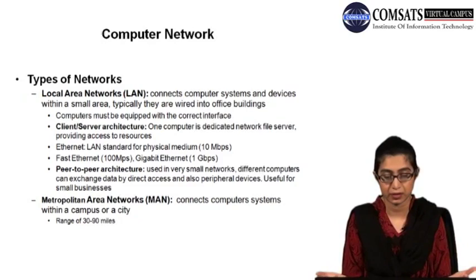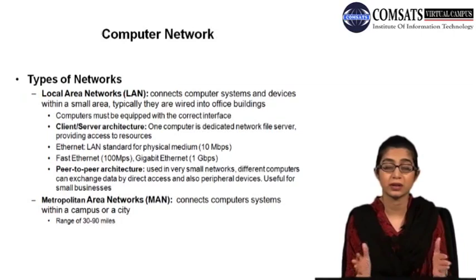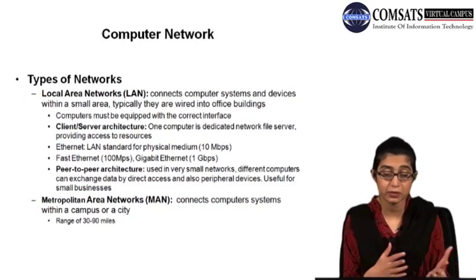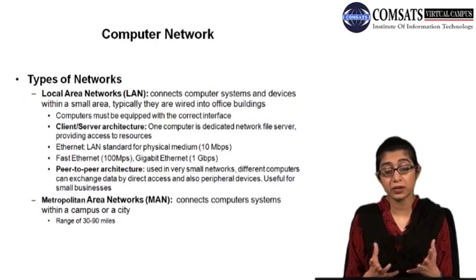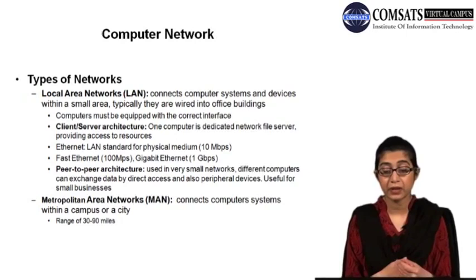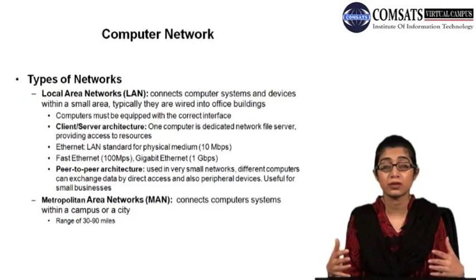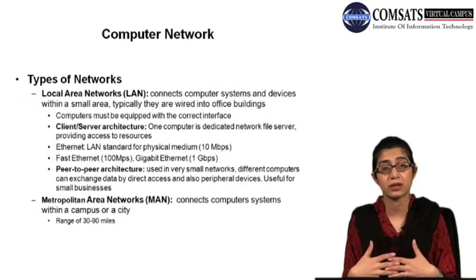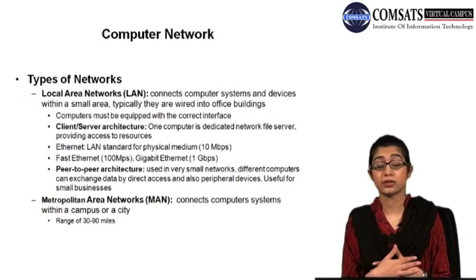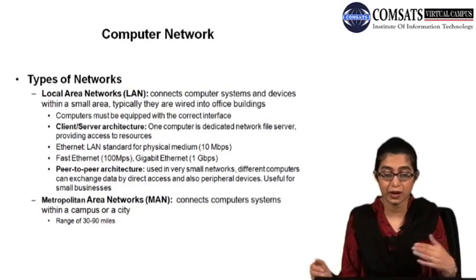The standard used with the LAN is basically Ethernet, which is a LAN standard for physical medium and works at the speed of 10 megabits per second. Fast Ethernet works at 100 megabits per second, or gigabit Ethernet works at 1 gigabit per second. Another architecture in local networks is peer-to-peer, used in very small networks where different computers are connected with one another and can exchange data by direct access and share peripheral devices attached to them. In peer-to-peer networks, a network operating system is installed on all the devices so they can share information, and each of them in a way becomes a server.